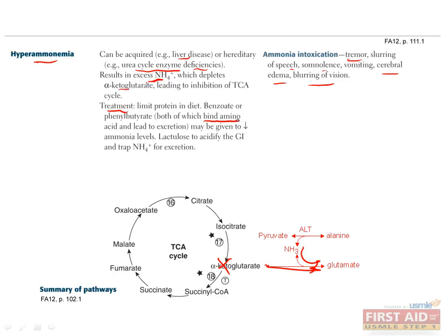The treatment of this condition is to limit protein in the diet and to administer amino acid binders, such as benzoate or phenylbutyrate, which will increase the excretion of ammonia. You can also give lactulose to acidify the GI tract, which traps ammonia so that it can be excreted rather than absorbed.